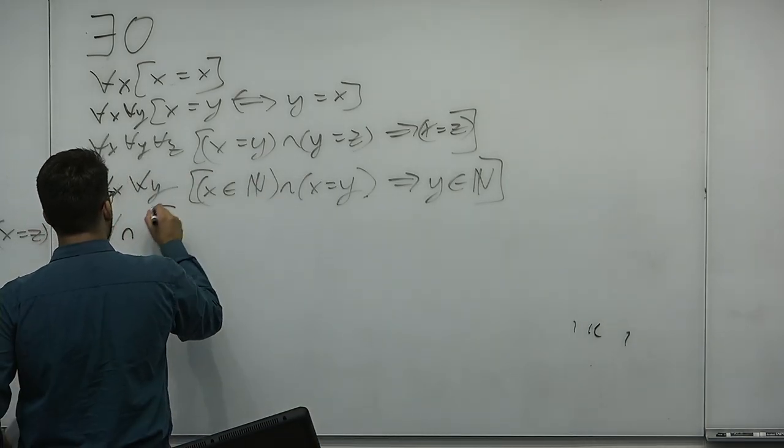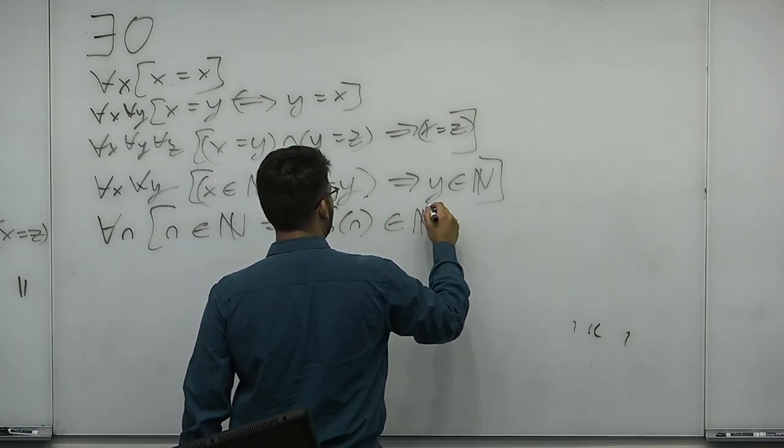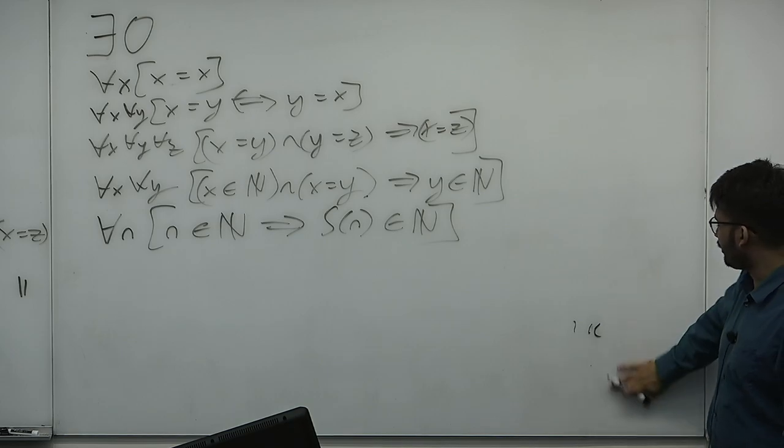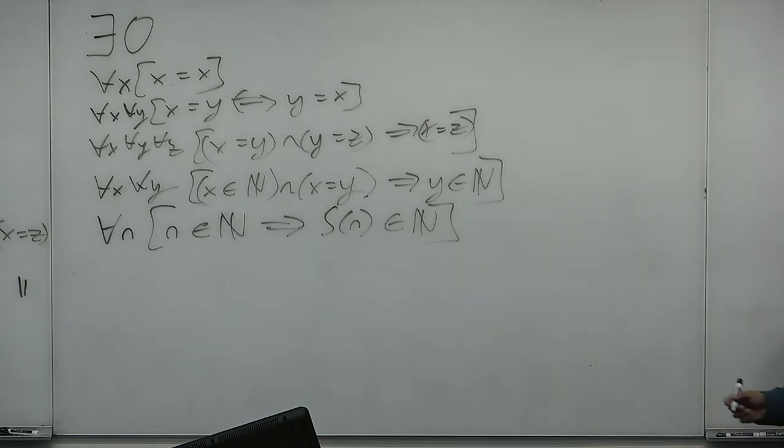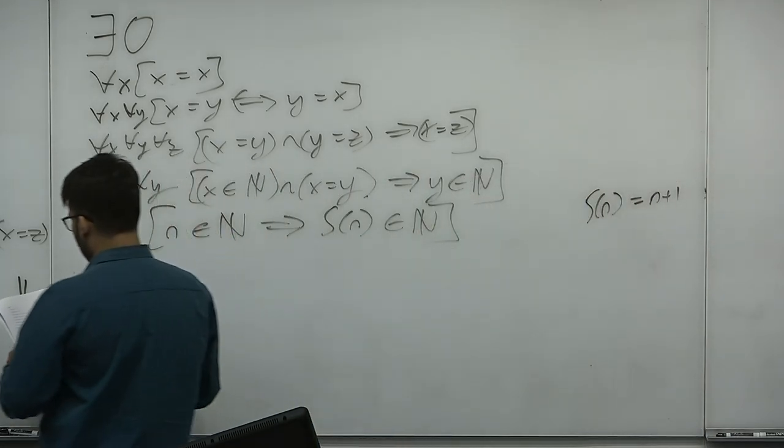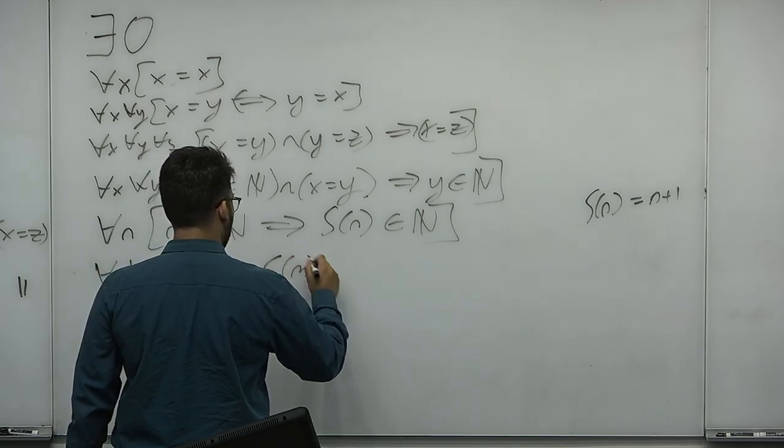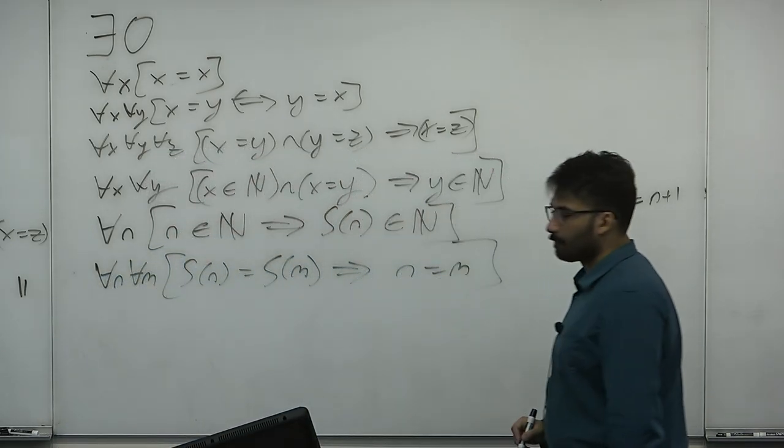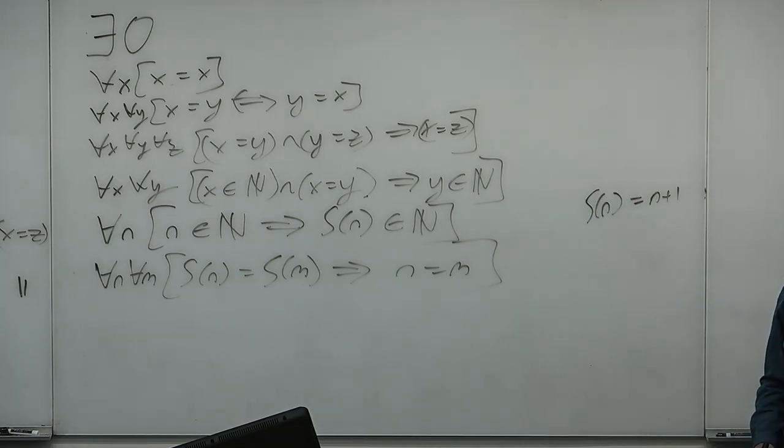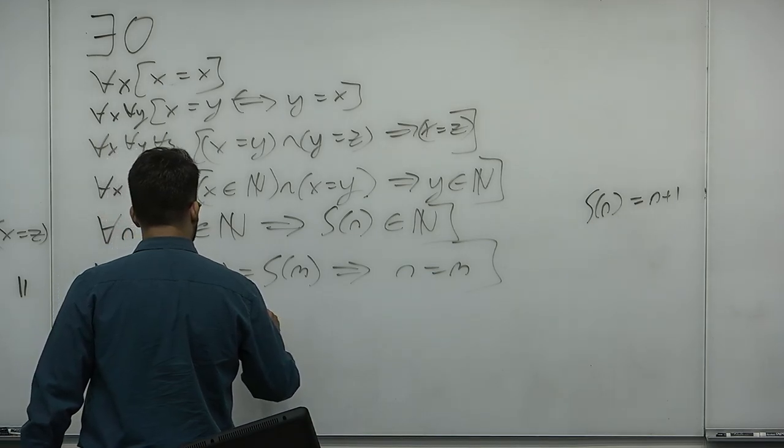For all n, n is a natural number implies that s of n is a natural number. Where s of n is our successor function. This is, of course, the induction. Every mathematician's most powerful tool is induction. Everything about infinite is, of course, induction. Successor function, of course, we defined as n plus 1, if you're using arithmetic here. Here's one. For all n, for all m, s of n is equal to s of m implies that n equals m. So, basically, the succession for all numbers goes in the same direction, so to speak. If you don't have that axiom, it could go infinitely in two different ways. And there's one final axiom, which is that no number exists which is the successor of zero.